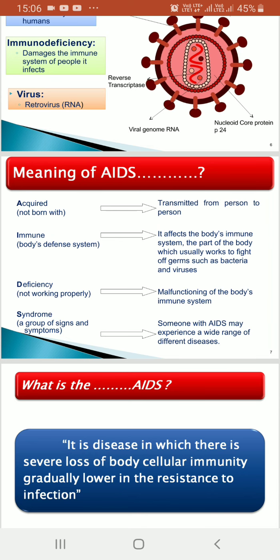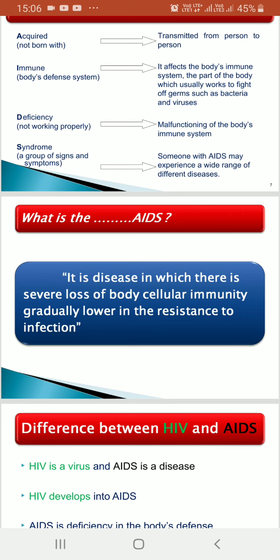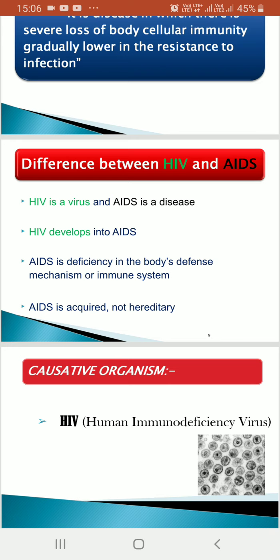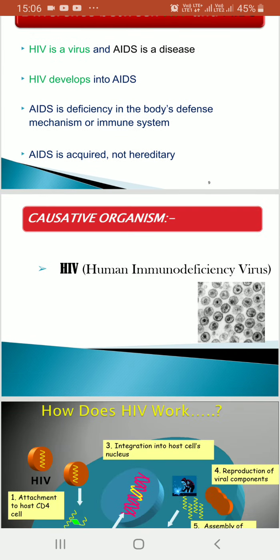AIDS is a disease in which there is severe loss of body cellular immunity, gradually lowering the resistance to infection. The difference between HIV and AIDS: HIV is a virus and AIDS is a disease. When HIV infection occurs, it will develop into AIDS. AIDS is a deficiency in the body's defense mechanism. AIDS is acquired, not hereditary, and the causative organism is HIV — Human Immunodeficiency Virus.